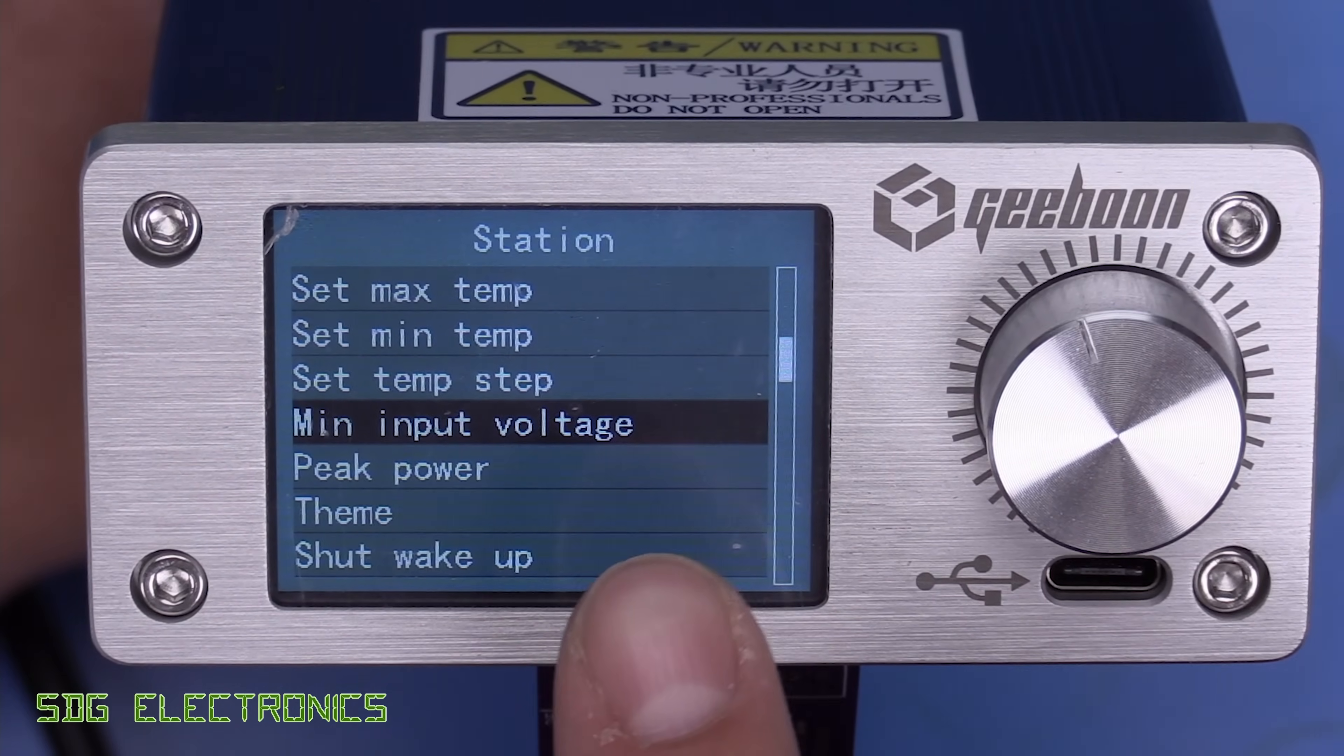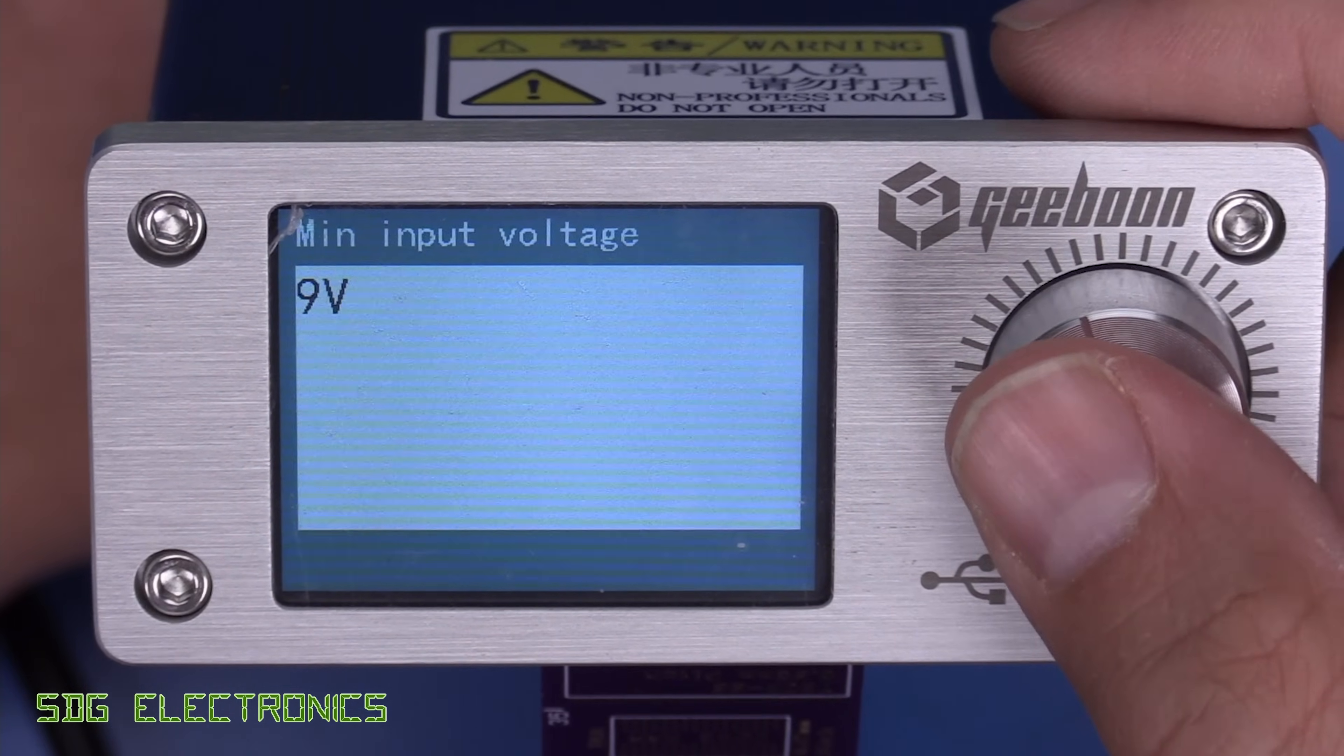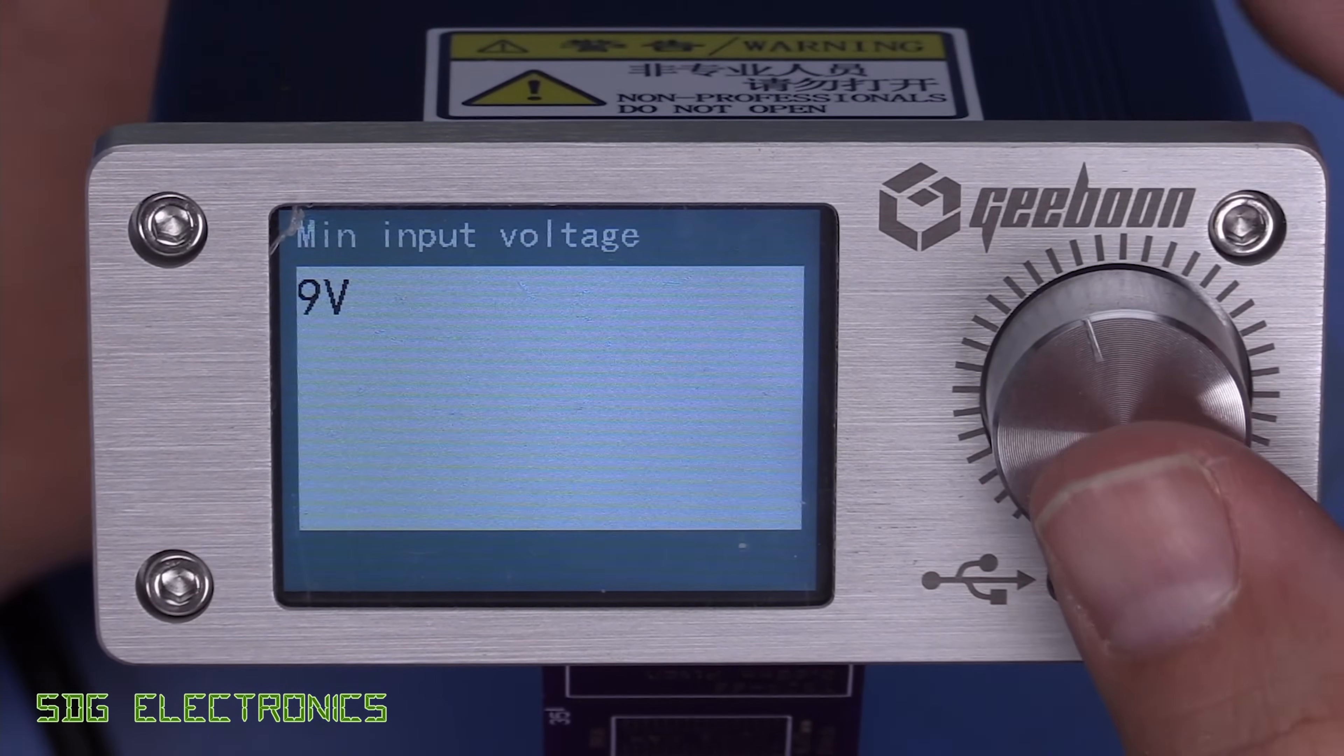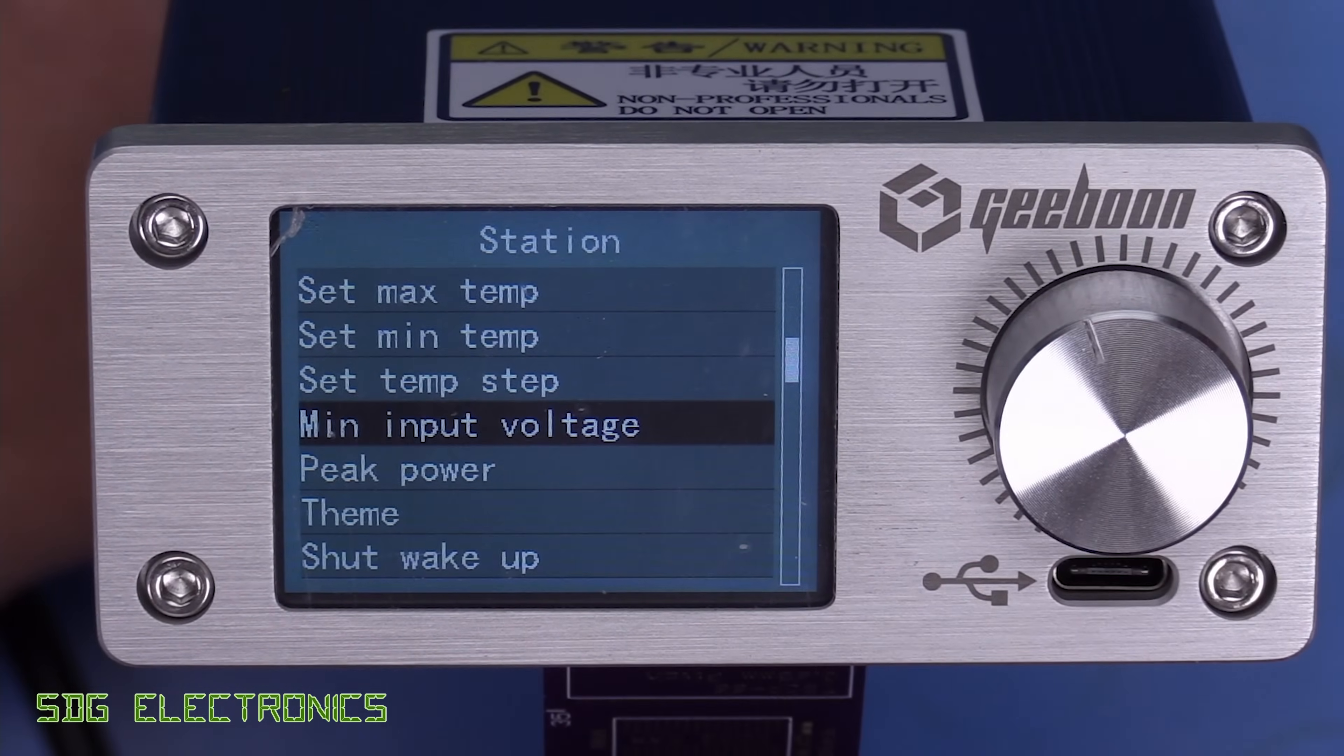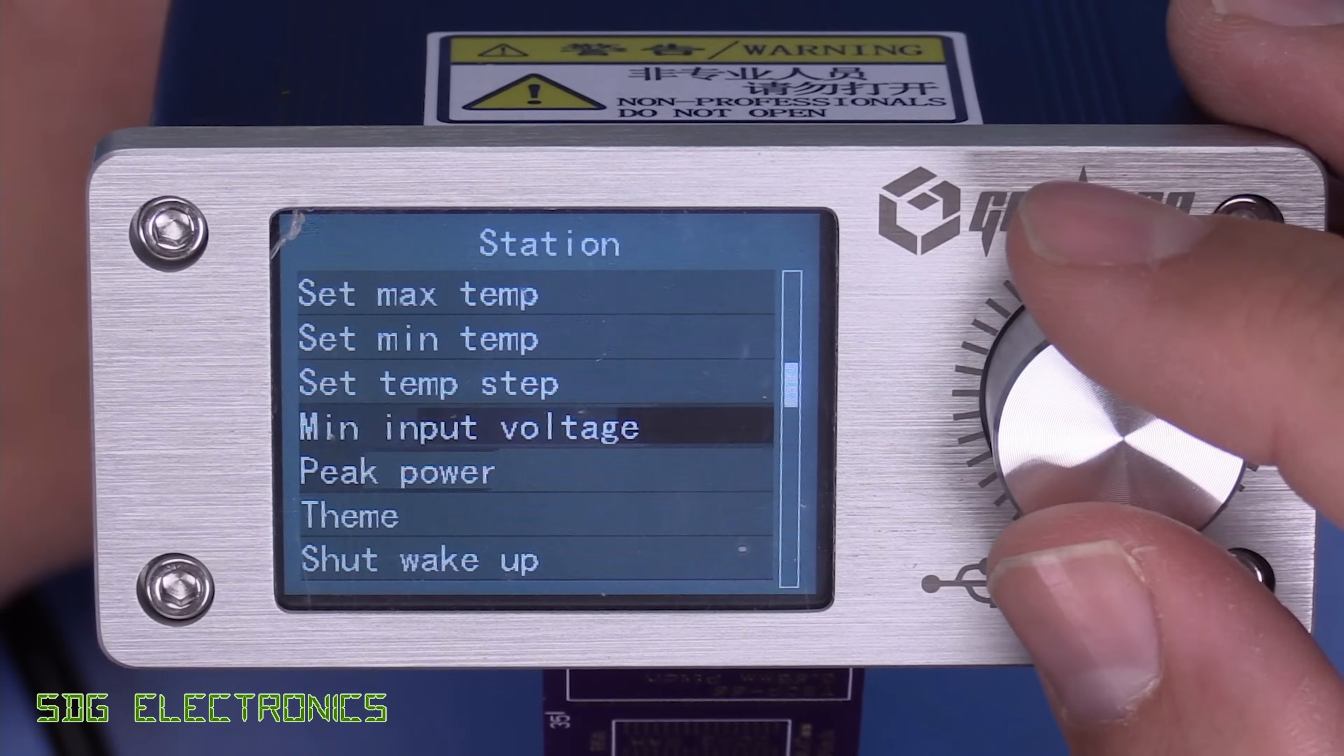Minimum input voltage. Now, I think this is more to do with when you have one of these stations that doesn't have the built in power supply. So at the moment, this one just says nine volts. But basically, when the front panel PCB detects the power supply has dropped below nine volts, then it will turn off the output.